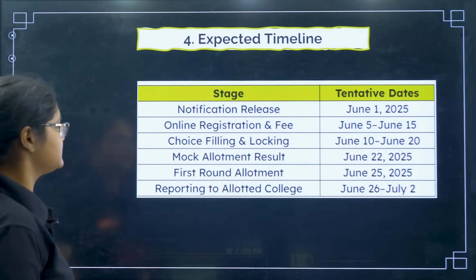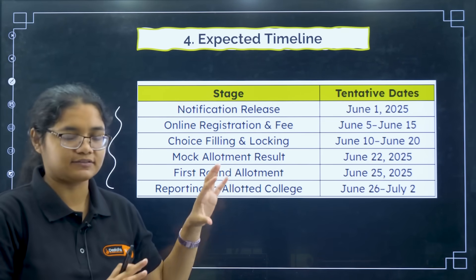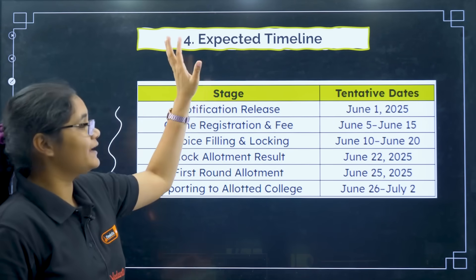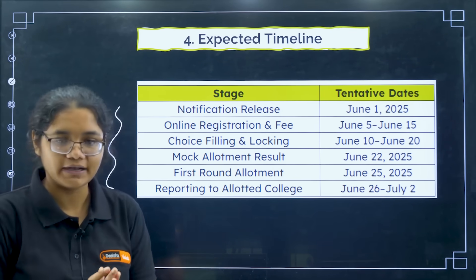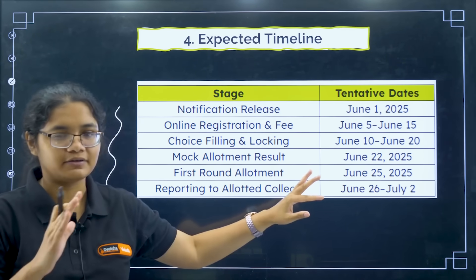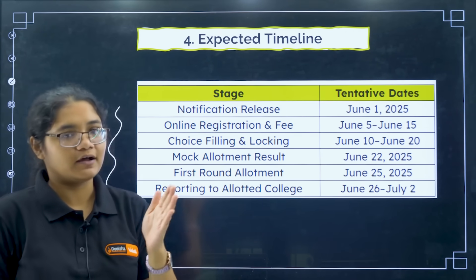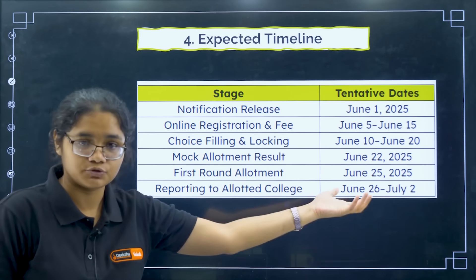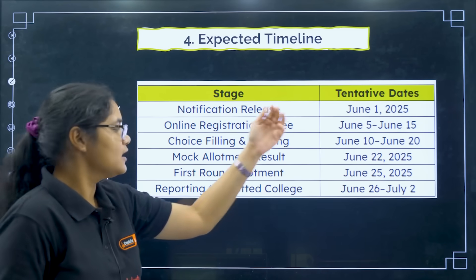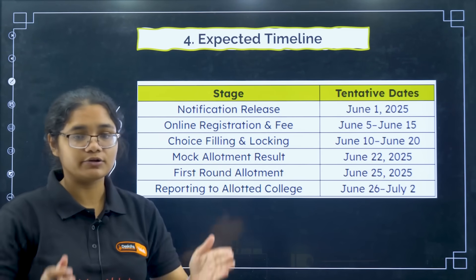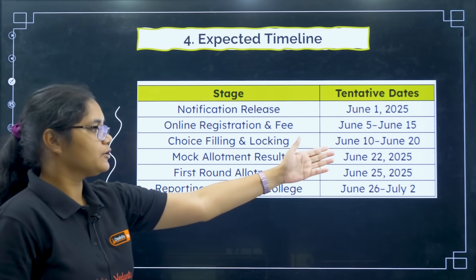Regarding the expected timeline — this is based on my estimates and last year's data, not from any official website, so it's just an expected timeline. Once KEA gives official dates, I will announce it in our channel. First, there will be a notification release — we expect that after results are out, maybe in the first week of June. Then online registration and fee payment, expected between the 5th to 15th. After that, choice filling, where you enter all your choices — which colleges and branches you want — and you'll get around 10 days for that.